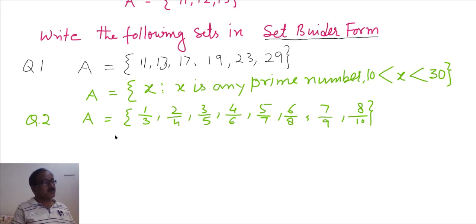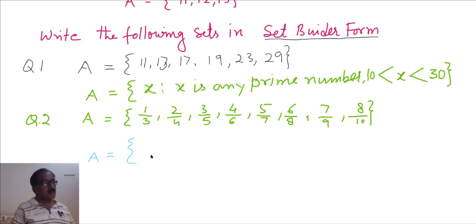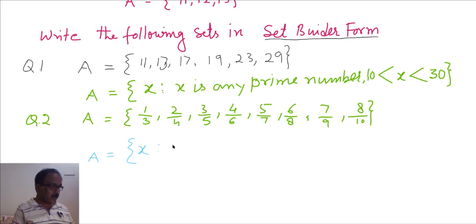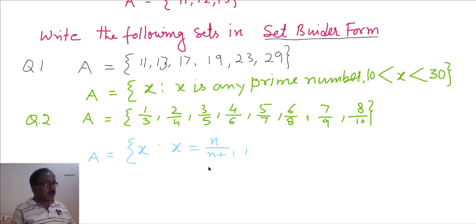Here you have to write this set into set builder form. We observe: 1/3, 2/4, 3/5, and so on. Suppose X is an element of this set such that X = N / (N + 2), where N belongs to the natural numbers.